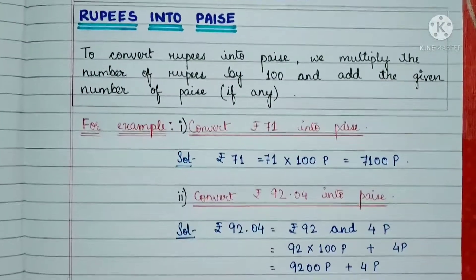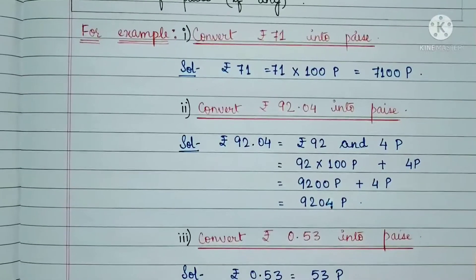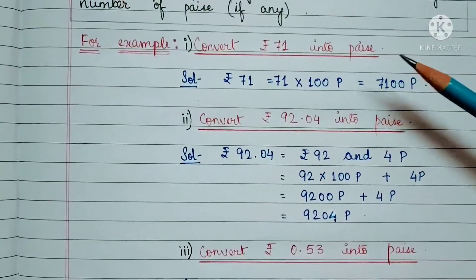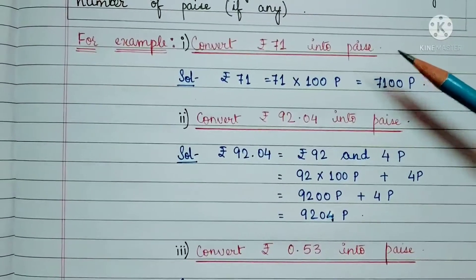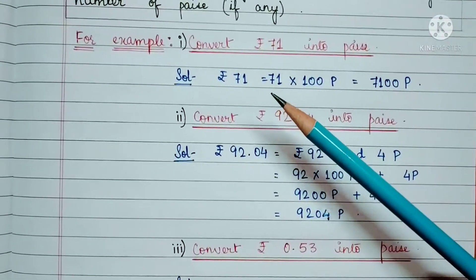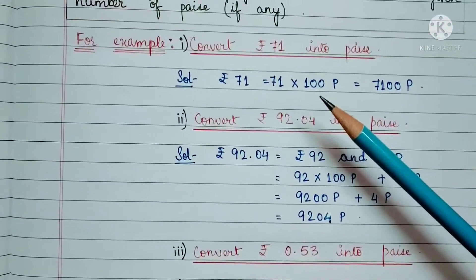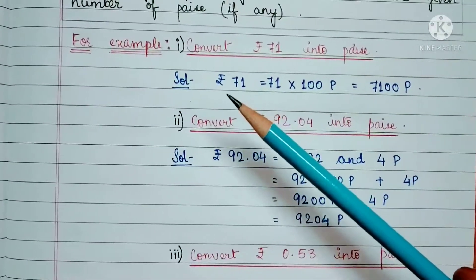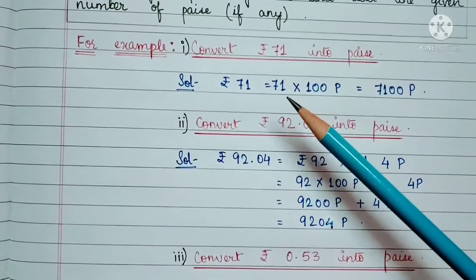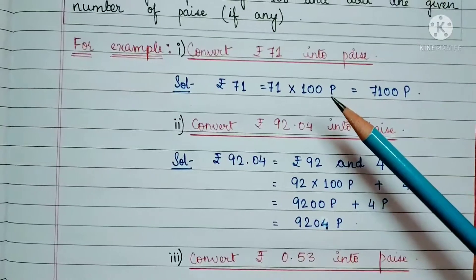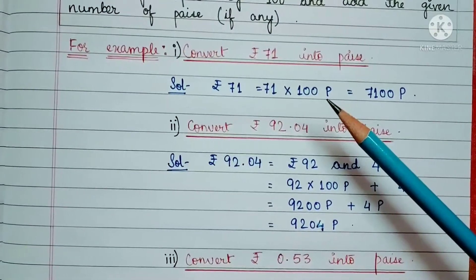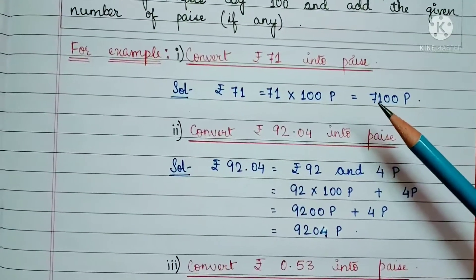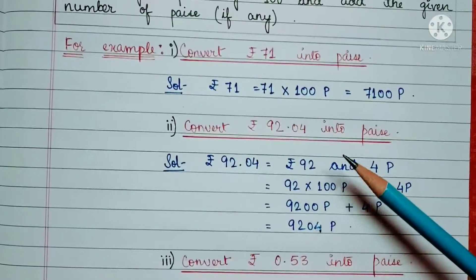Let's look at some examples for better understanding. First example: convert rupees 71 into paise. Solution — for converting rupees 71 into paise, we will simply multiply 71 by 100. So rupees 71 is equal to 71 multiplied by 100 P. This capital P represents paise. So 71 multiplied by 100 is equal to 7100 paise.